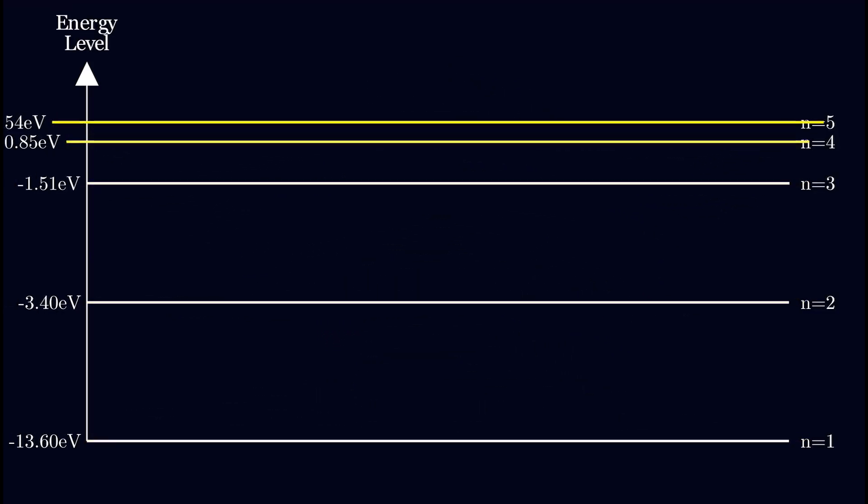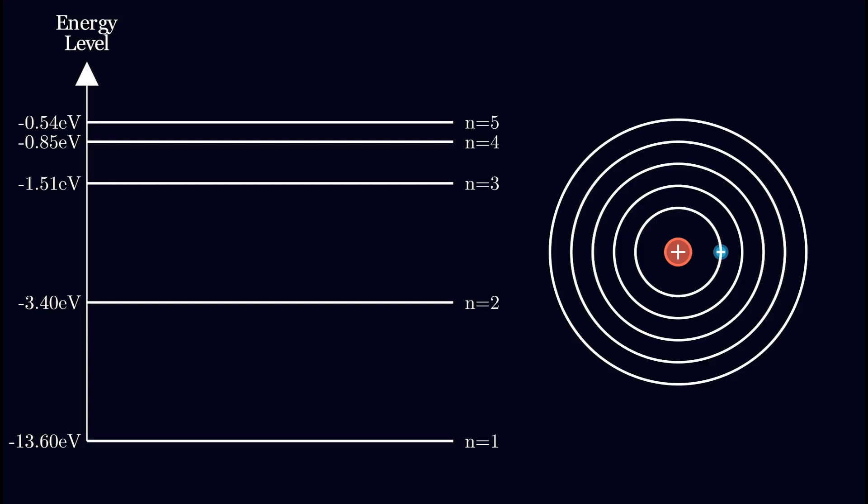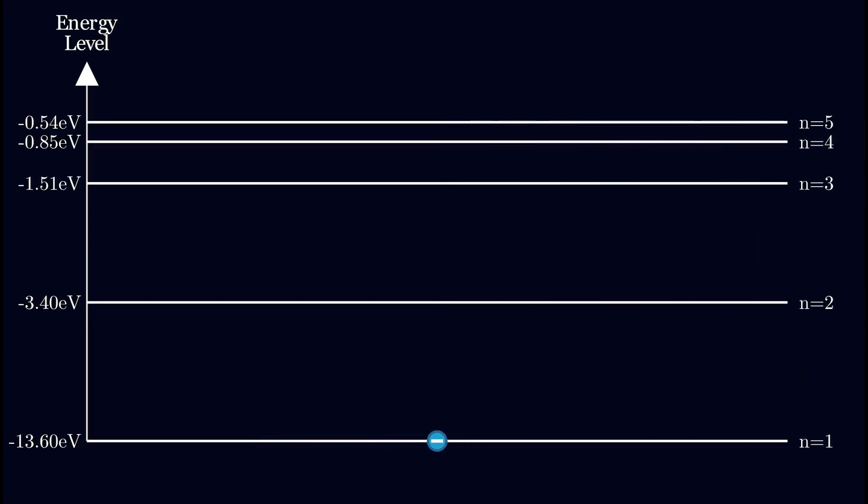These straight lines represent the different shells. Each shell has a distinct amount of energy. This bottom line represents our first shell and each line above is the next consecutive shell. We can think of the energy levels as positions on the hill so at this level we can think of the electron being further up the hill having more potential energy.